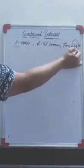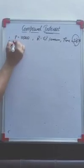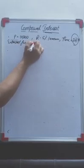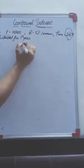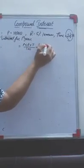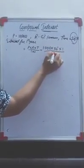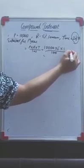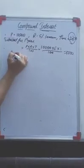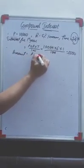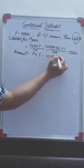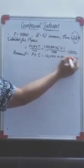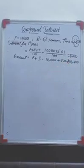Over here, time is not a whole number, it is 2.5 years. You will calculate interest for the first year using P into R into T upon 100, where T is 1. So it is 10,000 into 5 into 1 upon 100. You will get 500 rupees. Amount will be principal plus interest — 10,000 plus 500 — so the amount accumulated after 1 year is 10,500.